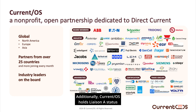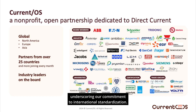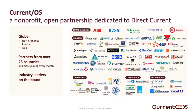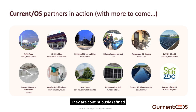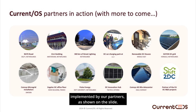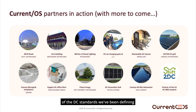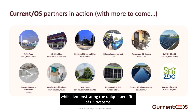Additionally, Current OS holds Liaison A status with the IEC Systems Committee for Low Voltage Direct Current, underscoring our commitment to international standardization. The electrical rules developed by Current OS are far from theoretical — they are continuously refined through real-world DC microgrid projects implemented by our partners, while demonstrating the unique benefits of DC systems.